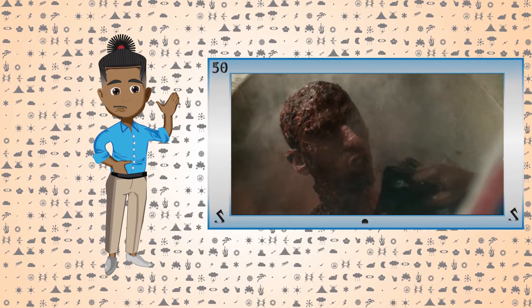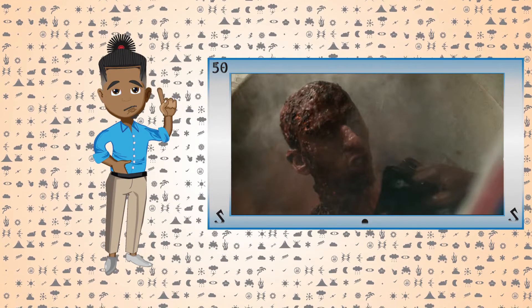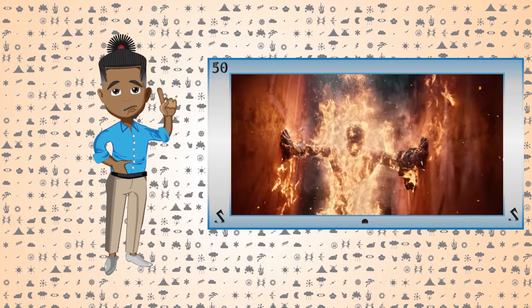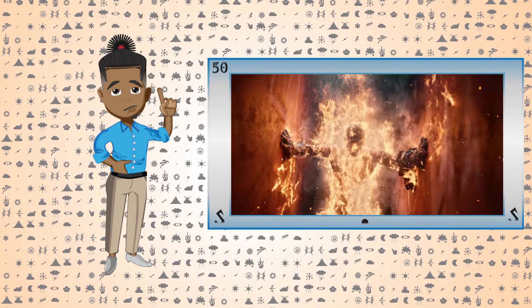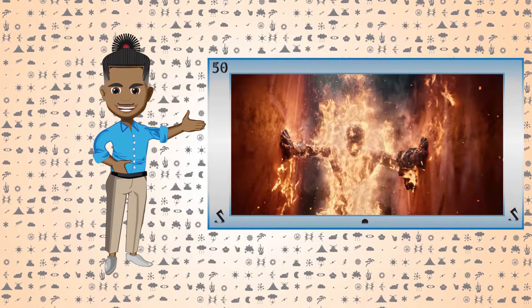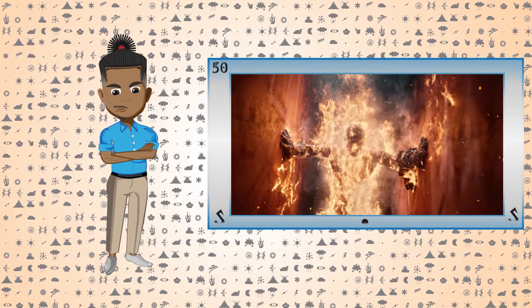But it doesn't stop there. It's shown in great detail that he cannot control any outside source of flame, even those he creates himself. Because during his fight with the Major, a character we'll get to later, the apartment complex around them burns.